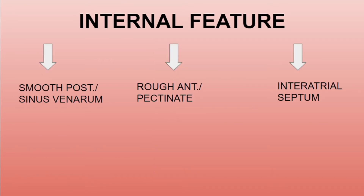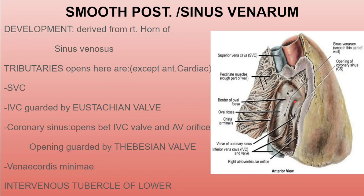The internal features of the right atrium are mainly three: the smooth posterior part, known as the sinus venarum; the rough anterior part, known as the pectinate part; and the interatrial septum. The sinus venarum is embryologically derived from the right horn of the sinus venarum. Almost all tributaries open into this smooth posterior part, except the anterior cardiac vein. The superior vena cava opens into it from the upper part.